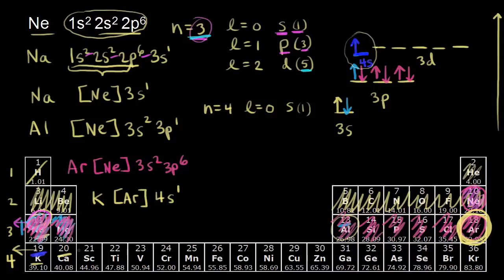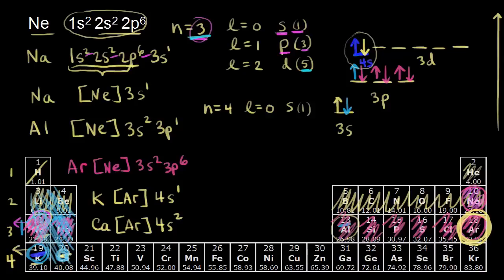For calcium, one more electron — the noble gas that precedes calcium is again argon. There's space in our 4s orbital, so we add another electron and pair the spins, giving 4s2 for the electron configuration of calcium. We notice this pattern on the periodic table: 4s1 for potassium, 4s2 for calcium. All of these elements on the left are filling s orbitals, so this is the S block on the periodic table.